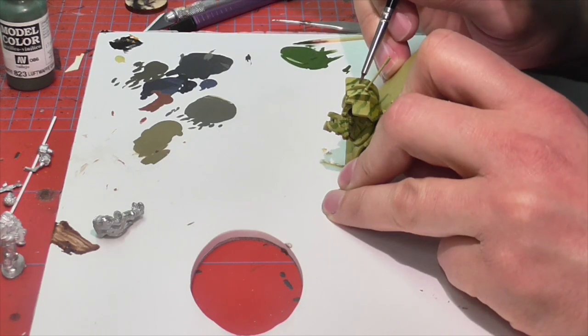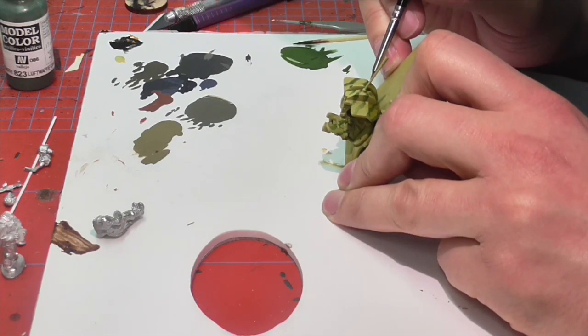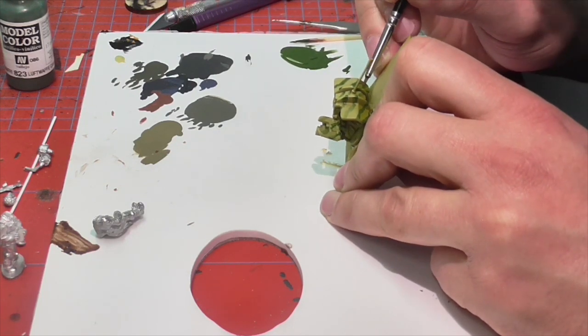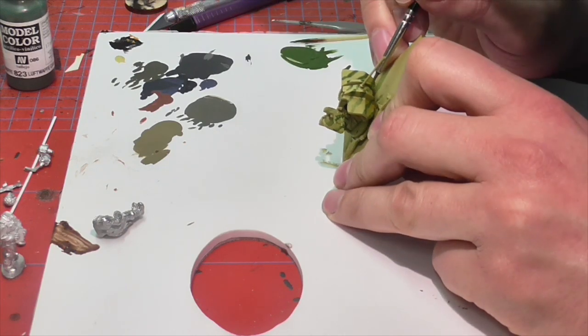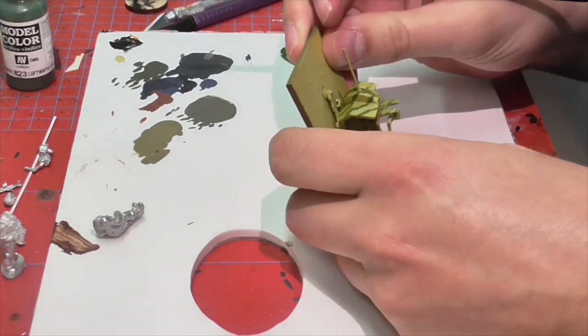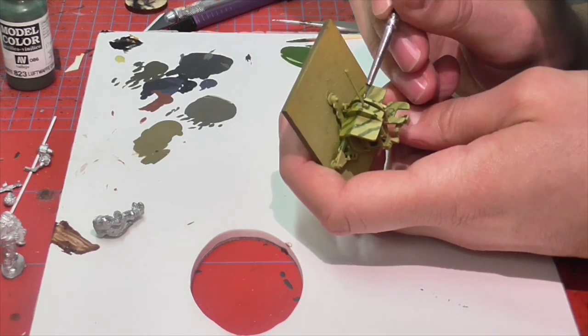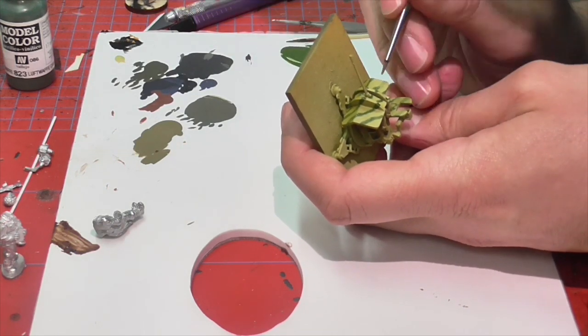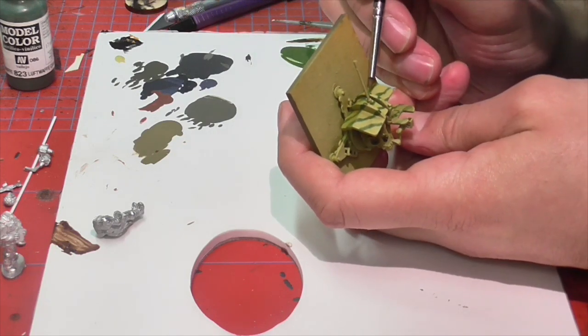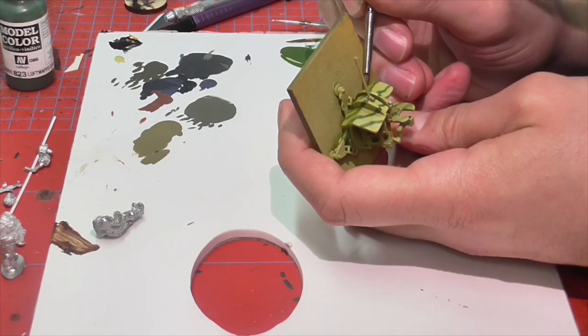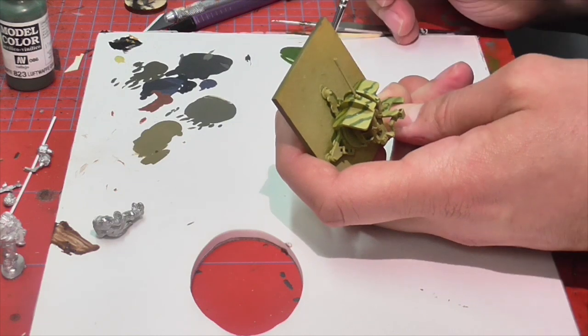And once he has applied these sort of very thin light stripes, he's going to go back in with a finer, thinner brush and paint a second layer down the middle of the stripes which will give that illusion of being sprayed on so it's darker in the center and then more faded and light out towards the edges of the pattern.